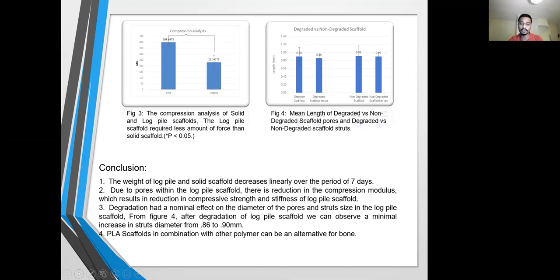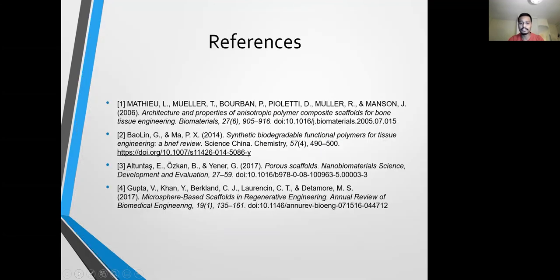As we can see from Figure 4, after degradation of the log-pile scaffold, we can observe a minimal increase in the strut diameter from 0.86 to 0.90 mm. PLA scaffold in combination with other polymers can be an alternative for bone tissue engineering. The references for this project are as follows.